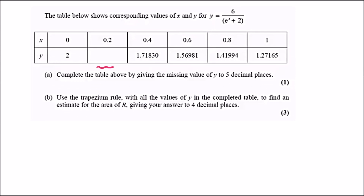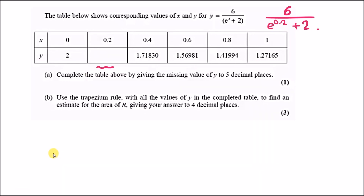Question three: the table below shows corresponding values of x and y for the function 6 over e to the power x plus 2. With our table, all we have to do is find the missing value and round it to four decimal places. To do this, plug in x = 0.2: evaluate 6 over e to the power 0.2 plus 2, and you get a value of 1.8625.